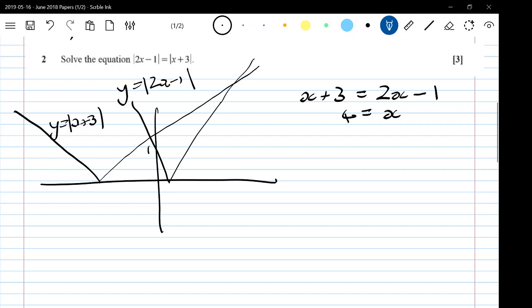And then, if we do the other one, the positive branch of x plus 3 and the negative branch of 2x minus 1. So, that gives us x plus 3 is minus 2x plus 1. So, 3x is minus 2, so x is minus 2 thirds.